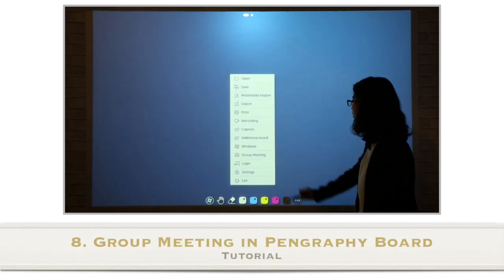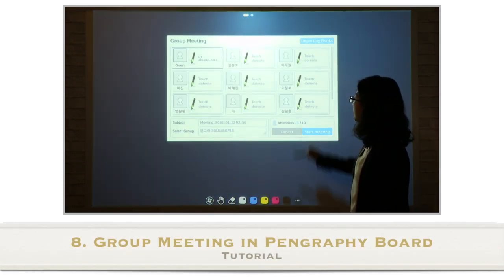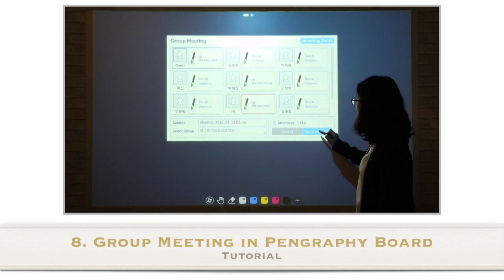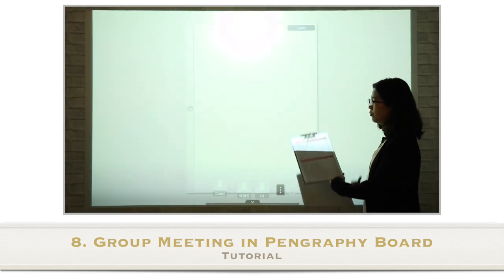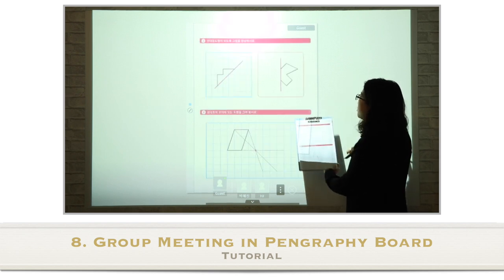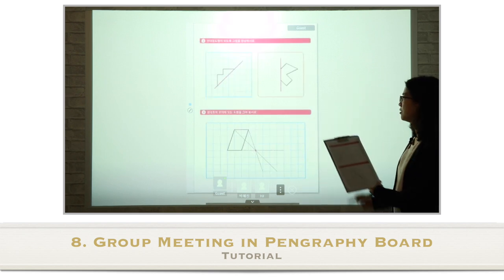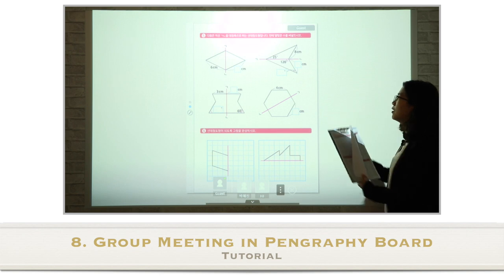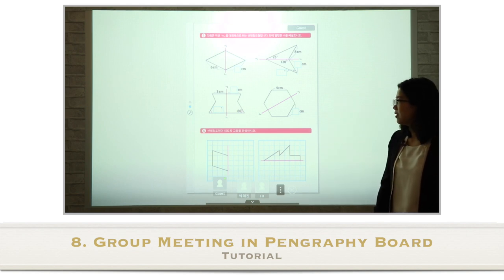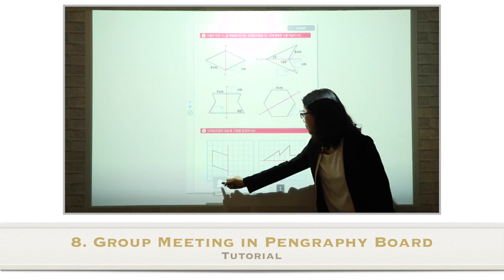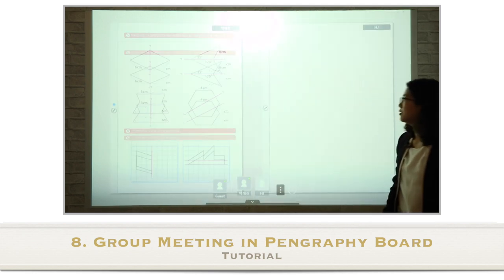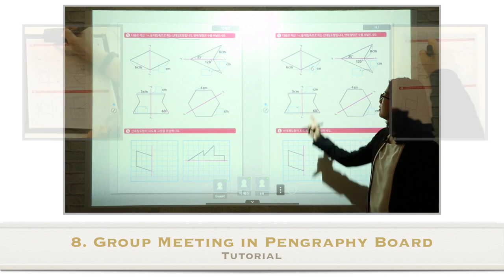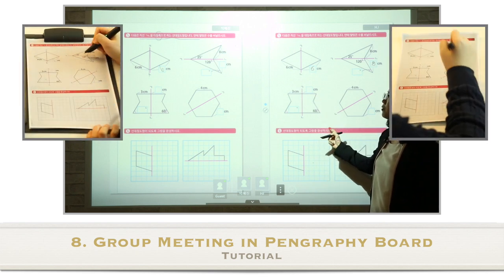Now let's learn about the group meeting function. Click the more icon and find group meeting. Select the students you want to enroll. The teacher can display the textbook by touching the page they want to put on the screen. You can also display other pages by touching on them. Let's display students' writing on the board by touching two students. The textbook of the students will appear on the board, and you can see their writing in real time.